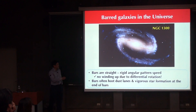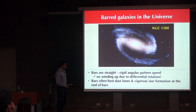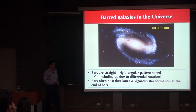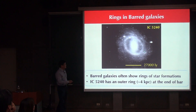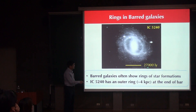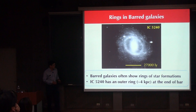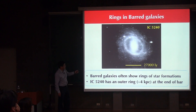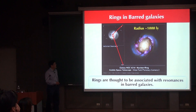Star formation not only occurs at the ends of these bars; in some cases you also see star formation in rings. You have a central bar and then a ring of star formation. This ring turns out to be quite large — the diameter is on the order of 27,000 light years. These rings are actually fairly common in bar galaxies. In some cases you not only see a large outer ring, but also a nuclear ring of star formation.